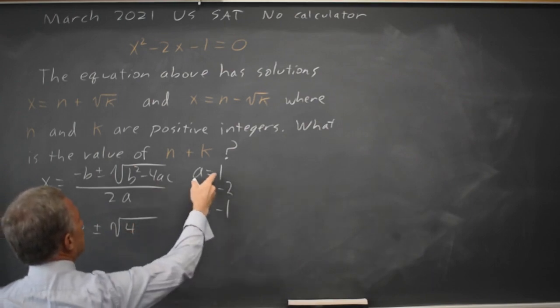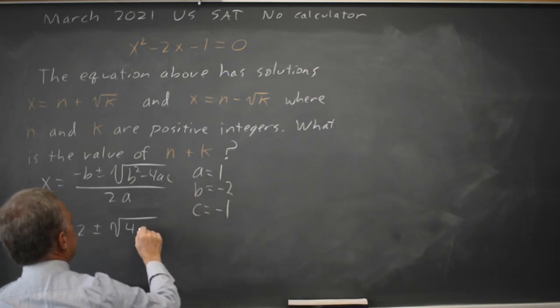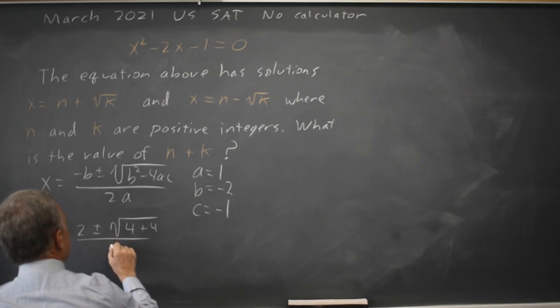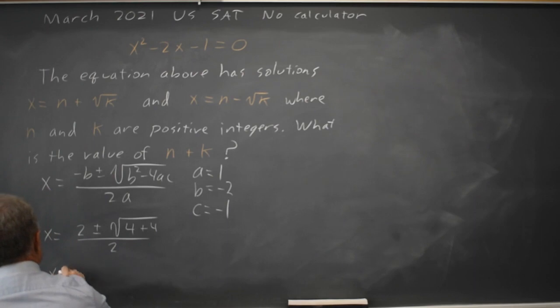Minus 4 times 1 times negative 1 is plus 4 over 2A where A is 1 so 2A is 2. This simplifies to X equals 2 plus or minus root 8 over 2.